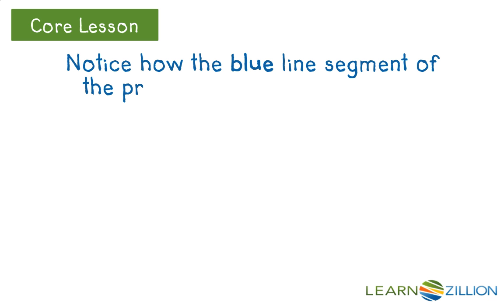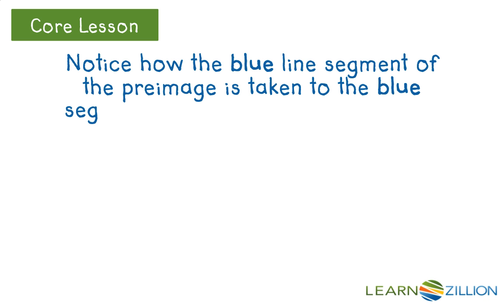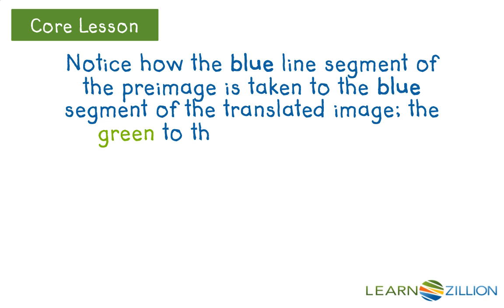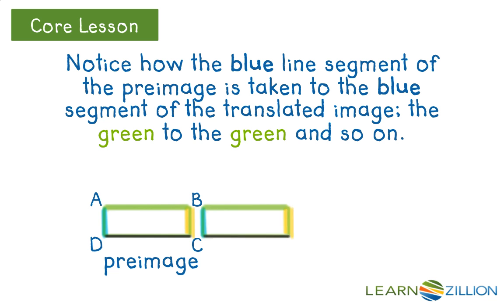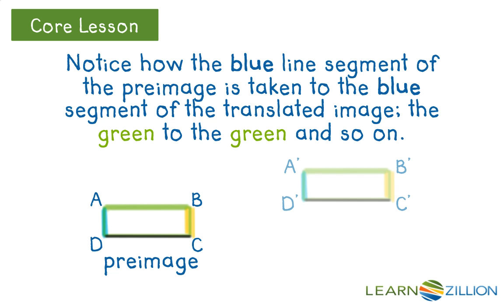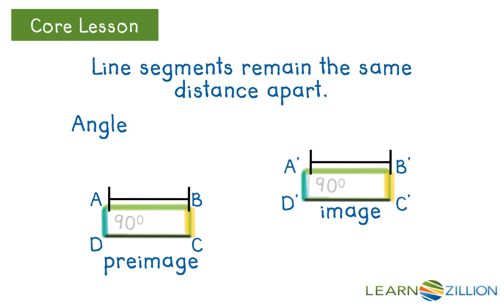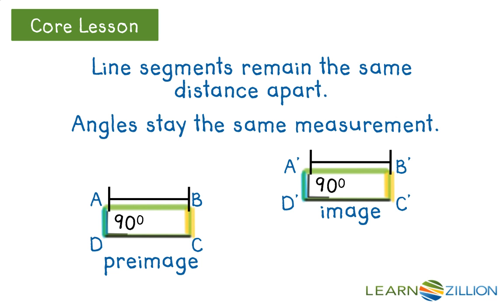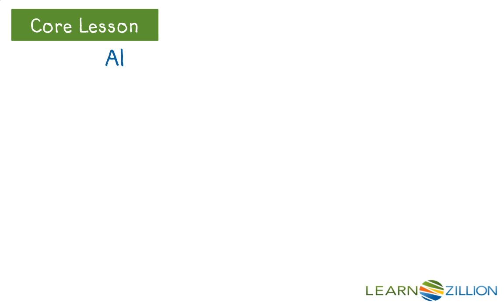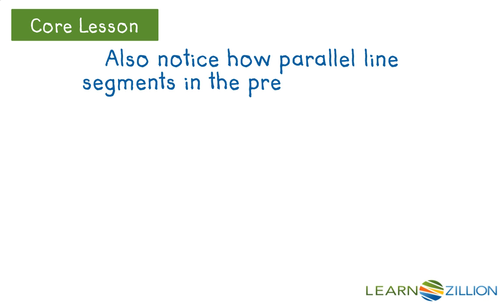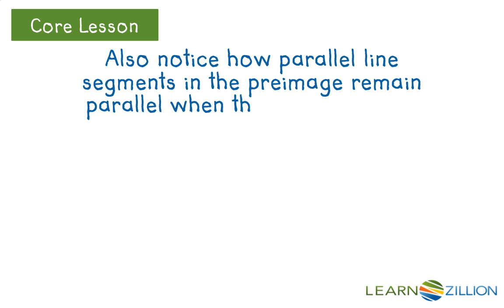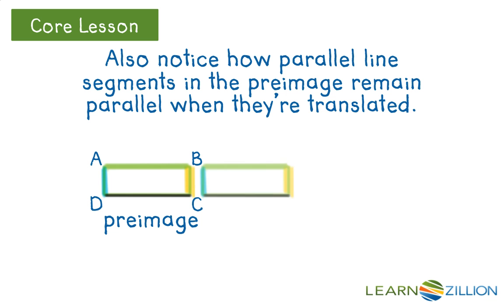Notice how the blue segment is taken to the blue segment, the green to the green, and so on. The translated segments are only in a new location but have not changed their size or shape. Notice how the segments remain the same distance apart and the angles within the figure retain their same measurement. Parallel segments within the pre-image remain parallel to one another in the translated image.